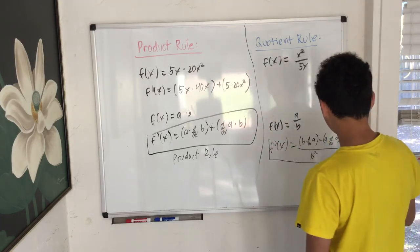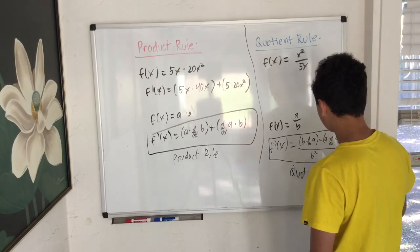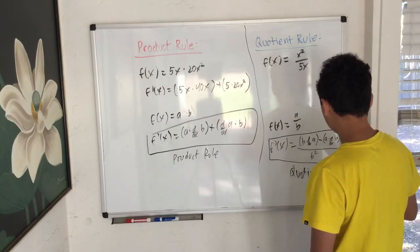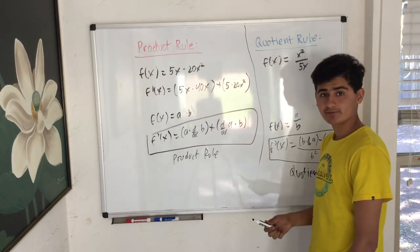So that's basically the definition of quotient rule. That's my fun little way of saying it. Low d high, minus high d low, square the bottom, and away we go.